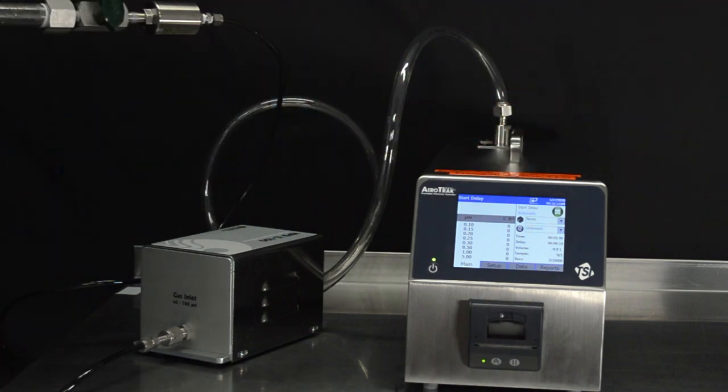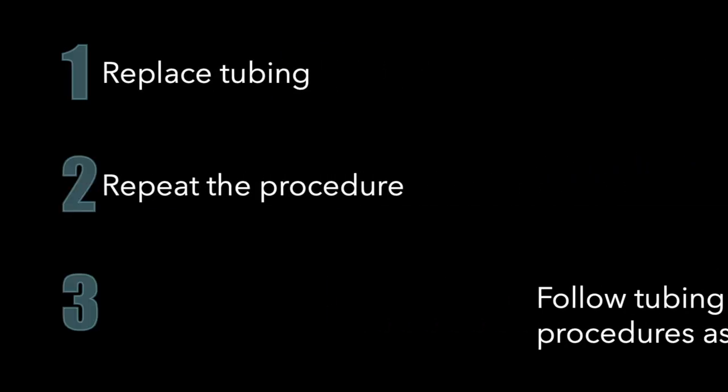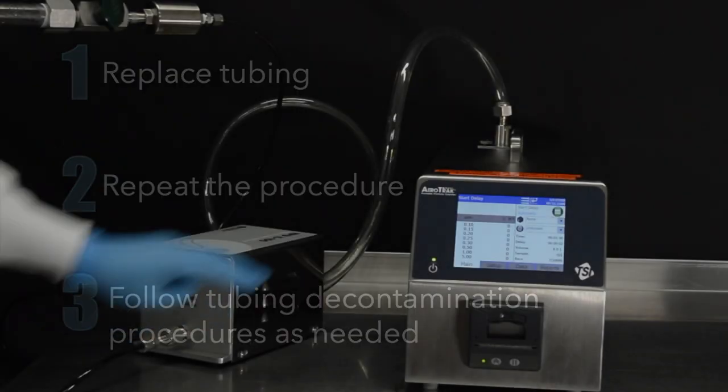The test will run for one minute. Run consecutive tests until you see zero particles consistently. If you continue to see particles after several tests, replace tubing and repeat the procedure. Follow tubing decontamination procedures as needed.